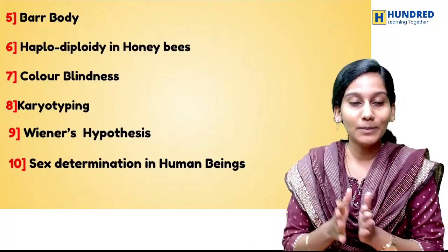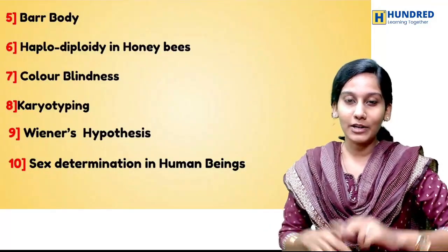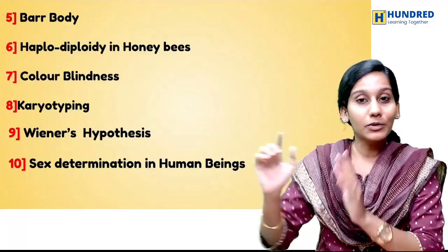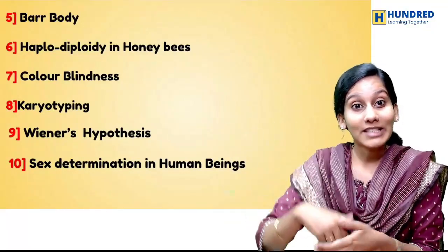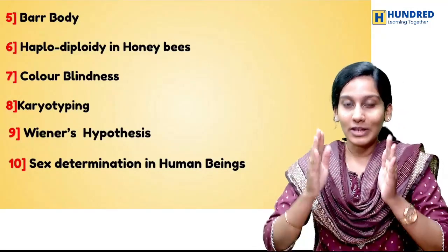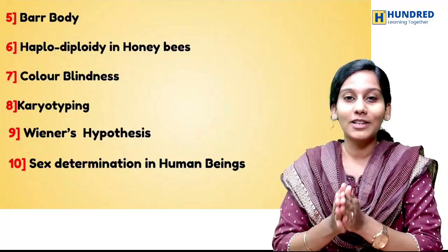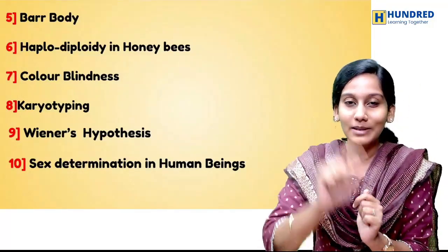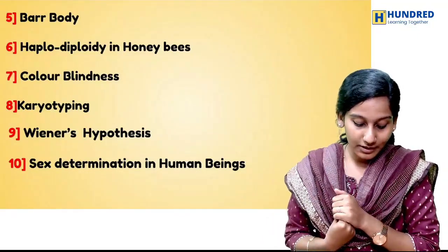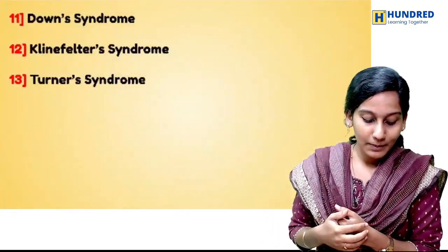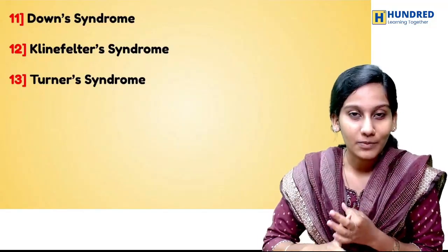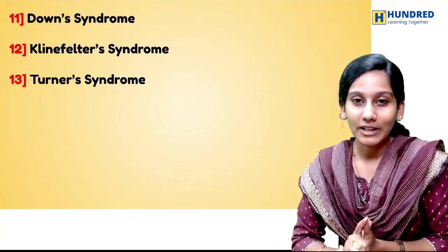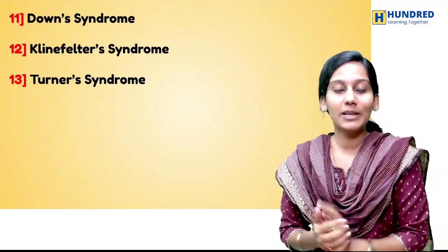And color blindness — we will talk about criss-cross pattern of inheritance. If you understand the criss-cross pattern, you can solve it. We will talk about percentage-related questions for one mark. In this chapter, the important topic is the criss-cross pattern of inheritance. Karyotyping symbols can be asked in a one-mark version. Wiener's hypothesis, sex determination in human beings, Down syndrome, Klinefelter syndrome, Turner syndrome — one or two syndromes can be expected in your examination. You might expect one 3-mark question from this chapter.